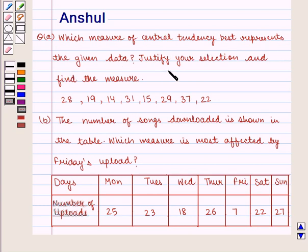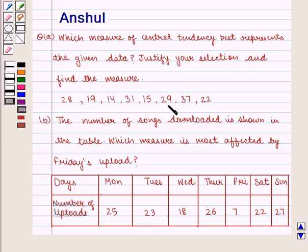Justify your selection and find the measure. The data is: 28, 19, 14, 31, 15, 29, 37, and 22.